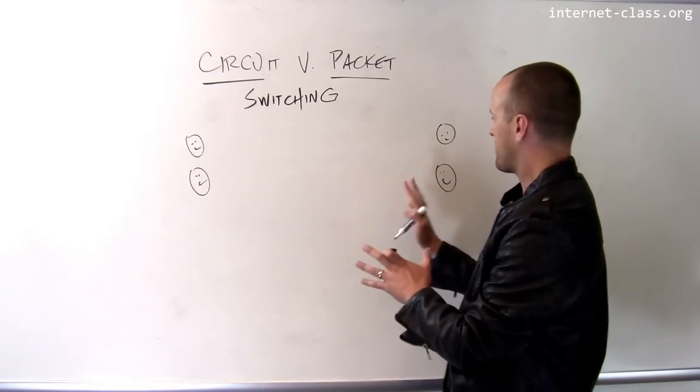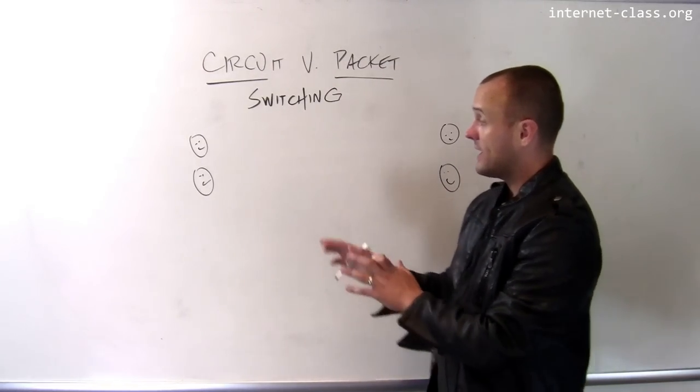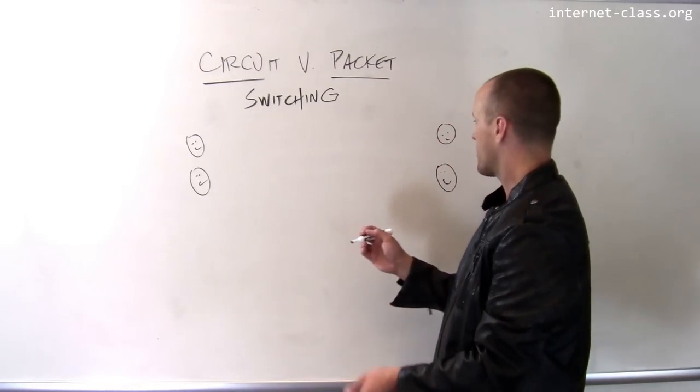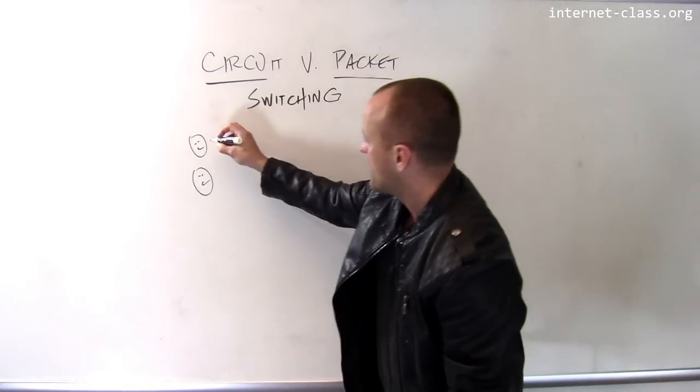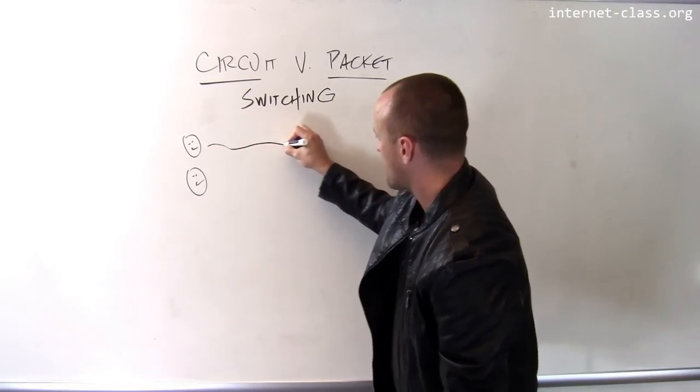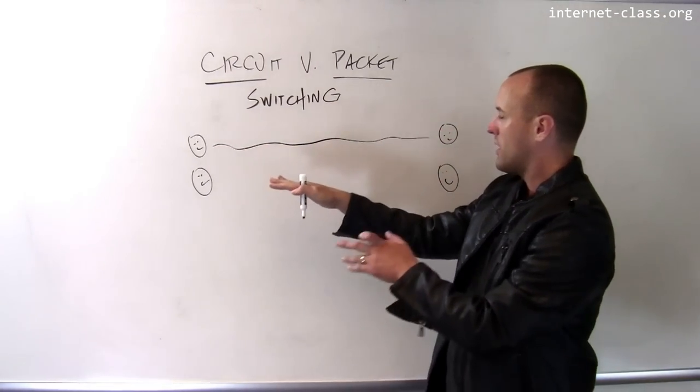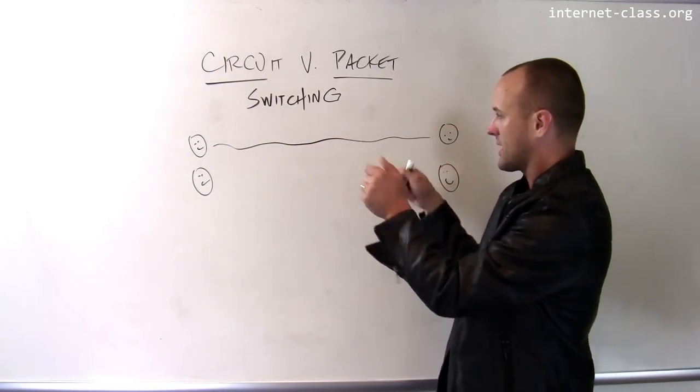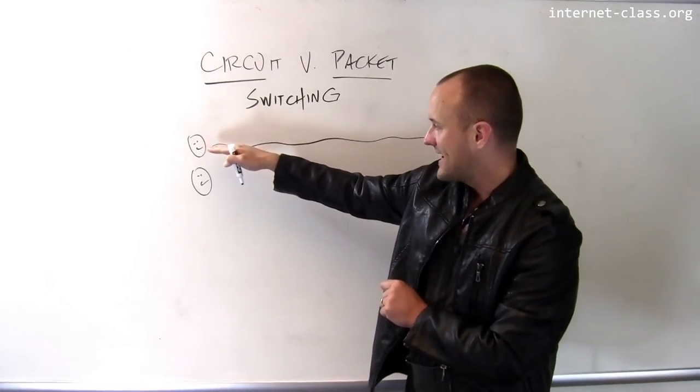In the old phone networks, here's how this would work. When these guys would get in touch, the phone company would build a circuit. So there'd actually be a wire. Now that wire might have passed through a couple of machines on the way, but there was a connection.